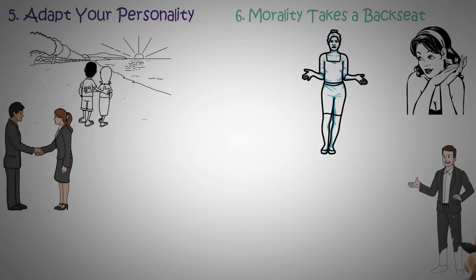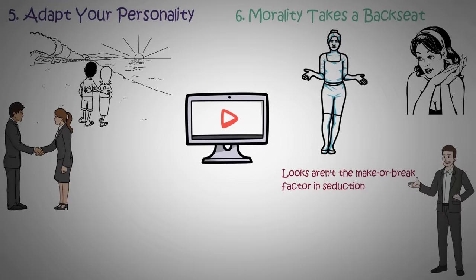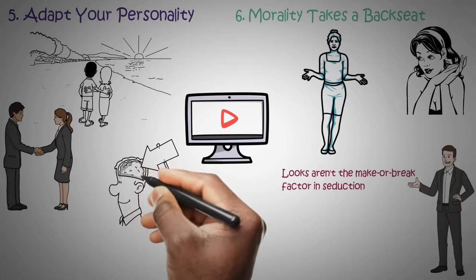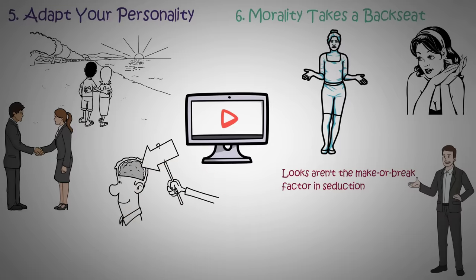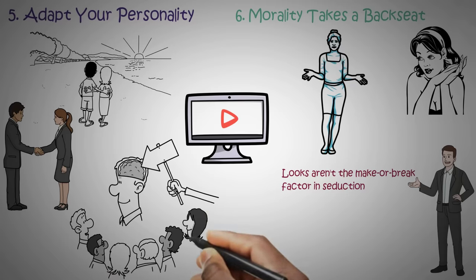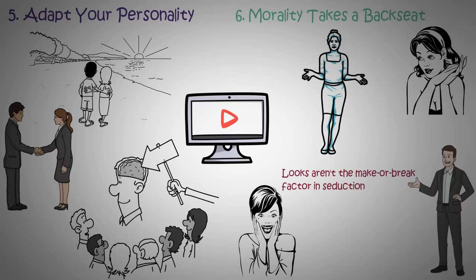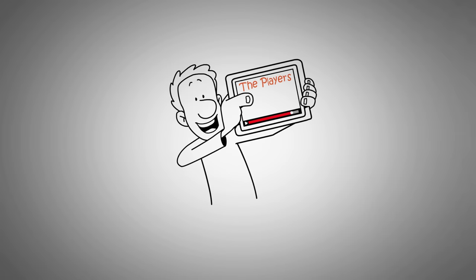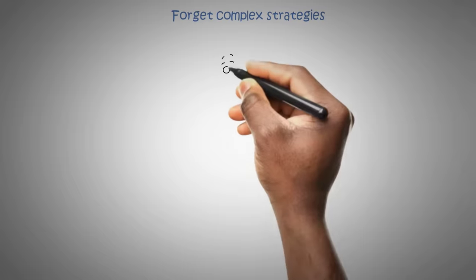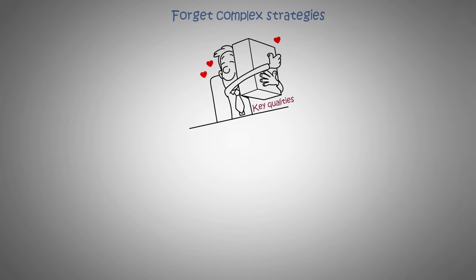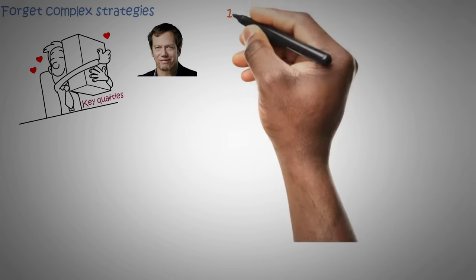And here's a surprising twist: looks aren't the make or break factor in seduction. Part two will teach you how to use psychological techniques to seduce your chosen targets successfully. These techniques work for everyone, regardless of their appearance. Part One: The Players. Forget complex strategies. It's all about developing some key qualities in yourself to make seduction easy. Greene's got a plan. One: Know your seducer type.